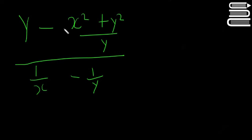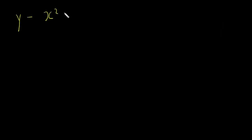If you came across a question like this, it's too much to try and do all at once, so you'd probably break it up into two little bits. I'm going to do the top first — I'll write the top line in yellow. So the top is going to be y minus (x squared plus y squared) over y, and then we'll do the bottom half and mix it all together.